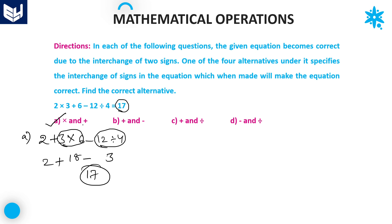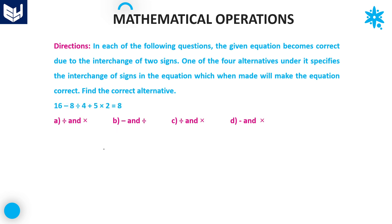Just by interchanging multiplication and addition we got the answer, so there is no need to check the remaining options. Option A is the right answer. In an examination, sometimes the answer might be in option B, C, or D. Even if you check all options, it will not take much more time to solve these problems.